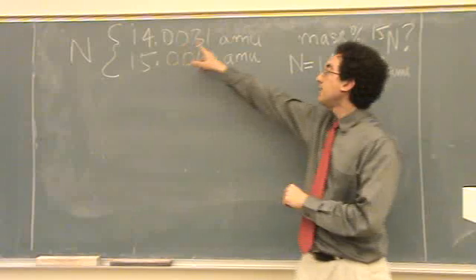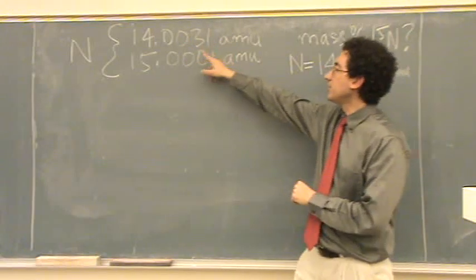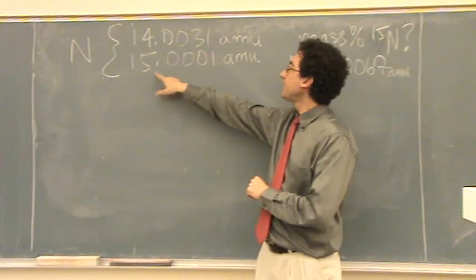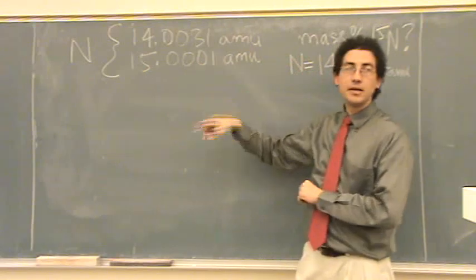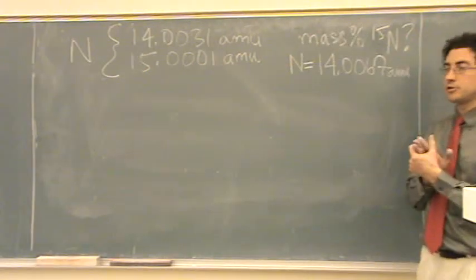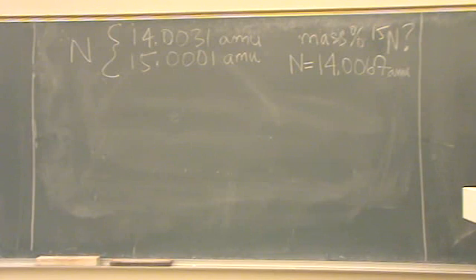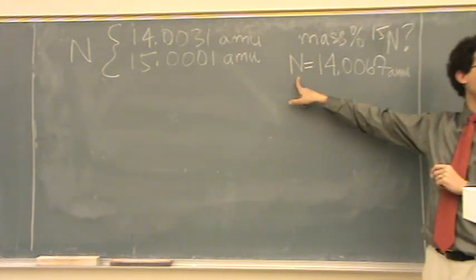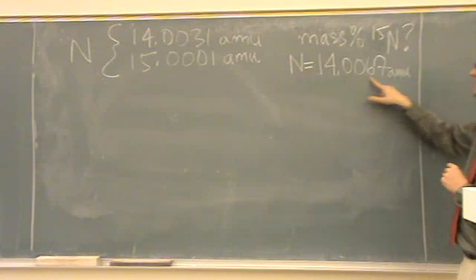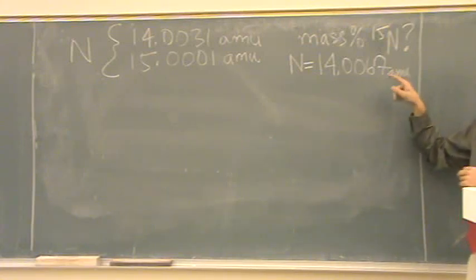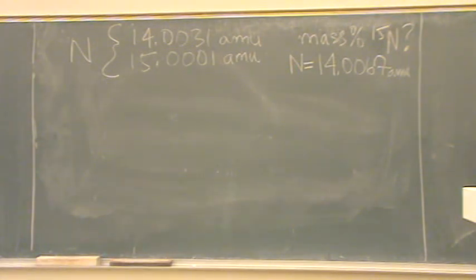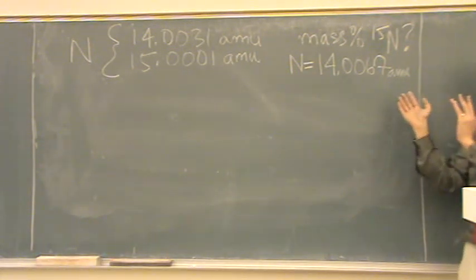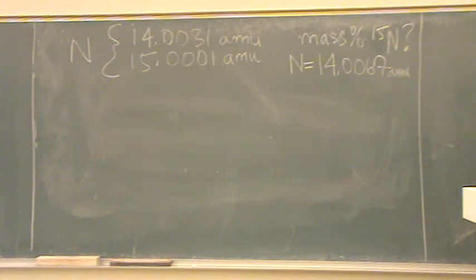The nitrogen 14 is this mass of AMU, nitrogen 15, 15.001 AMU, and it's saying basically those are the two most common isotopes of it. It also says that this is basically the atomic mass of nitrogen, is this number, 14.0067. And if you look at your periodic table, usually it says 14.01, that's where that number comes from, just more sig figs. It wants to know the mass percent of nitrogen 15.